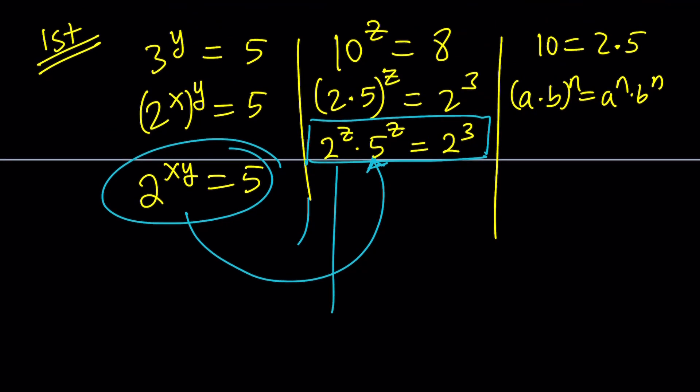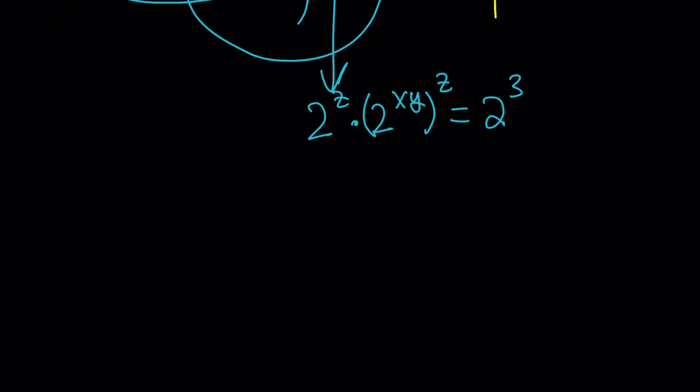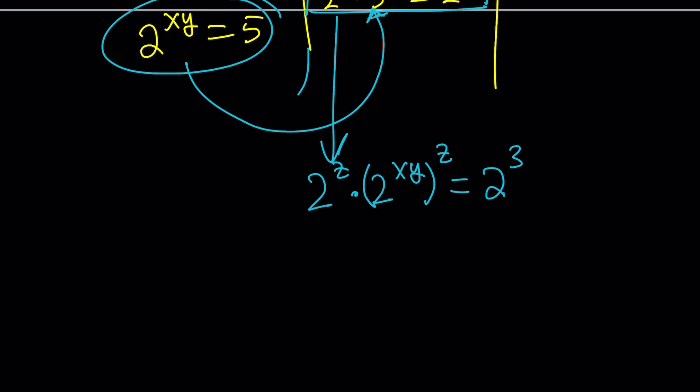This gives us 2 to the power z times 5, which can be written as 2 to the power xy. And then raise it to the power z equals 2 to the third. So, the nice thing about this equation is all the bases are the same. So, when the bases are the same, we are happy, right? Because we could multiply and divide.